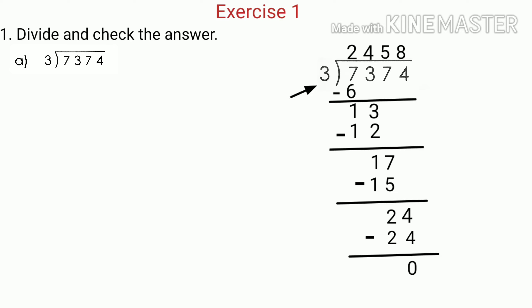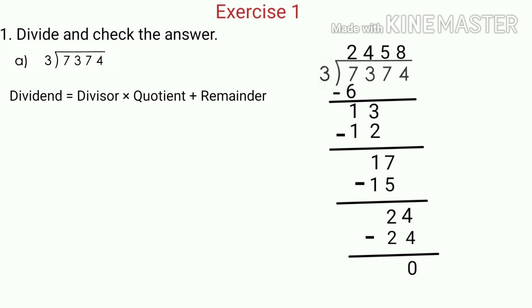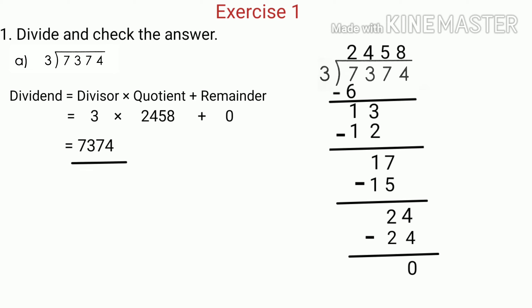Here the divisor is 3, the quotient is 2458, and the remainder is 0. We can check the division using the rule: Dividend equals divisor multiplied by quotient plus remainder. We multiply 3 and 2458 to get 7374, then add 0 to 7374. Any number added with 0 is the number itself, so we get 7374, which equals the dividend. So the answer is correct.